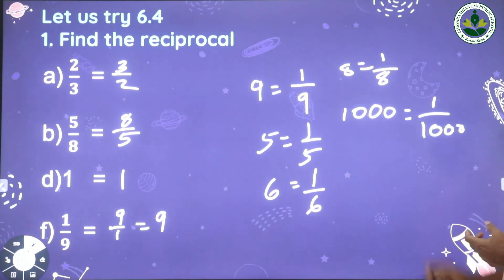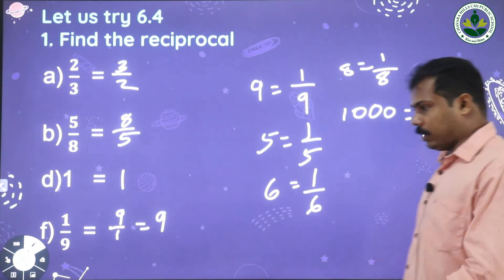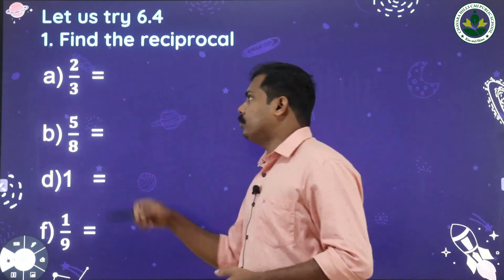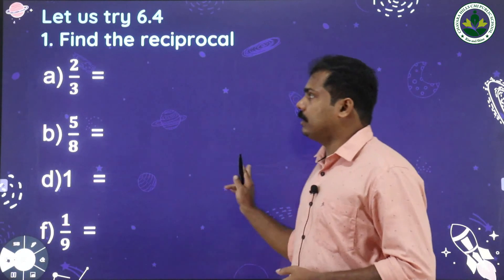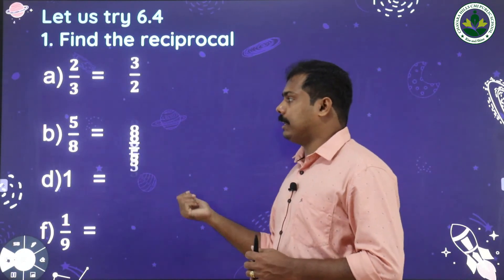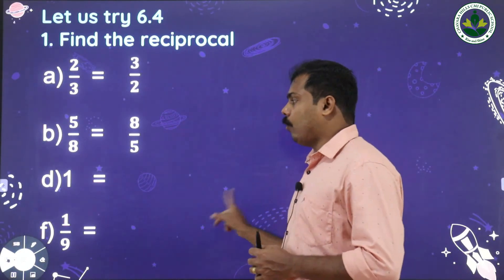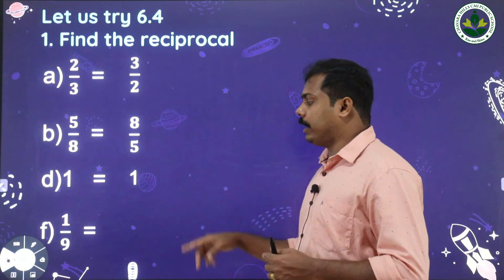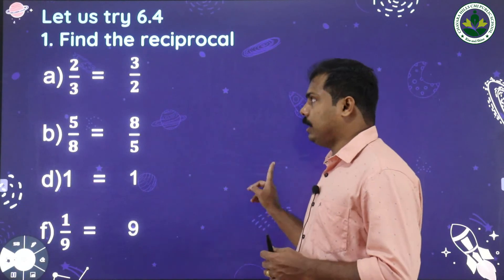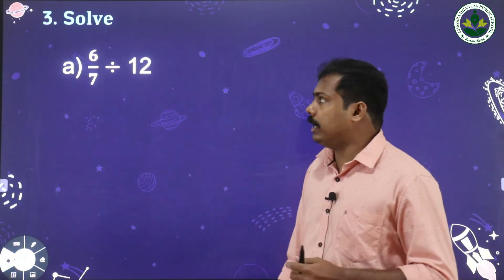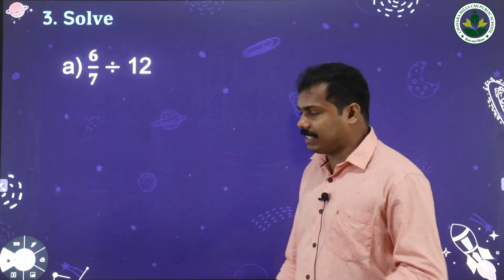So the reciprocal of a whole number is equal to 1 by that number. To summarize: reciprocal of 2/3 is 3/2, 5/8 is 8/5, 1 is 1 itself, and 1/9 is 9.